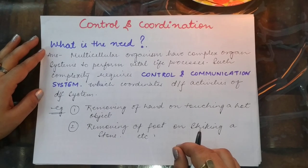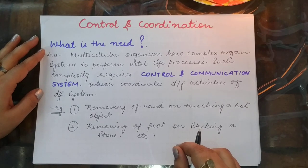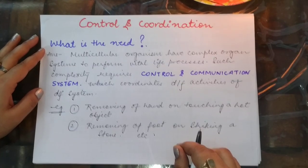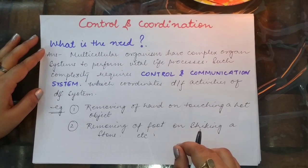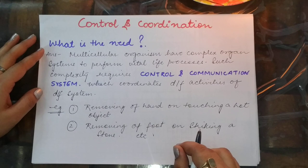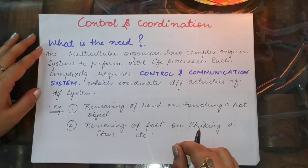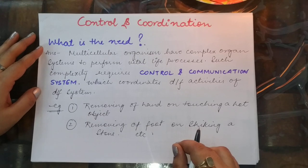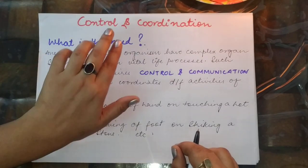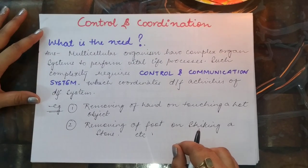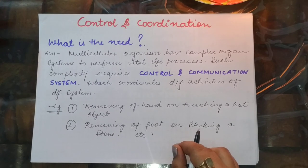Hello everyone, welcome back. We are starting with the second chapter of biology in class 10th, that is Control and Coordination. As we have already discussed in the introduction, control and coordination is one of the metabolic processes which is very important in the human body. The brain is basically acting as the control and coordinating center in human beings.